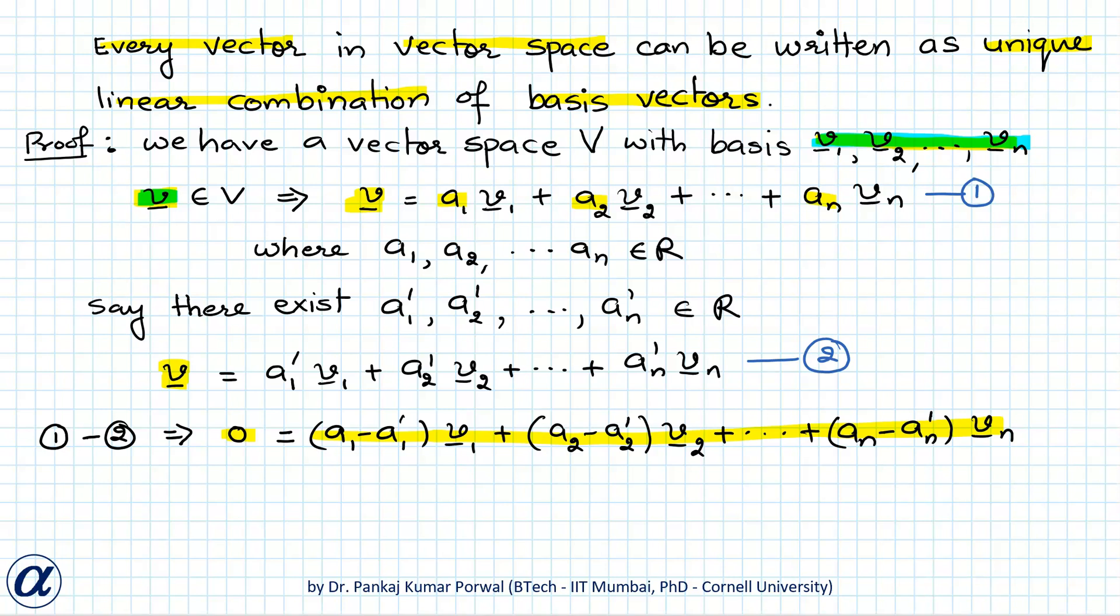Because the basis vectors are linearly independent, this implies A1 minus A1 dash equals A2 minus A2 dash equals dot dot dot equals An minus An dash and they all are equal to 0.